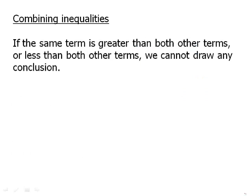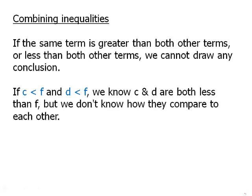If the same term is greater than both other terms or less than both other terms, we cannot draw any conclusion. If c is less than f and d is also less than f, we know that c and d are both less than f, but we don't know how they compare to each other. For example, if f is 100, then c and d are both numbers less than 100, but there's nothing telling us which one is bigger than the other.